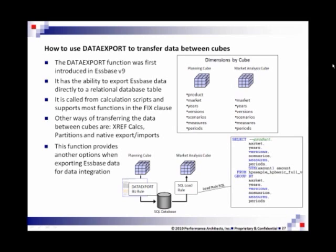So, the data export functionality first came out in N9 and is obviously still there and it's great. We love it and we use it a lot. It has the ability to export directly to a relational table. It could export to a file in text format and binary format and it's pretty powerful. And you can call it from a calc script, that's what makes it powerful. You can say fix on this and then run the data export.